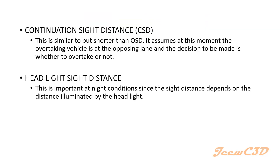The fourth type is headlight sight distance — the length of road that can be seen under night-time conditions. We generally take the headlight sight distance as equal to the stopping sight distance after applying headlight sight distance criteria.